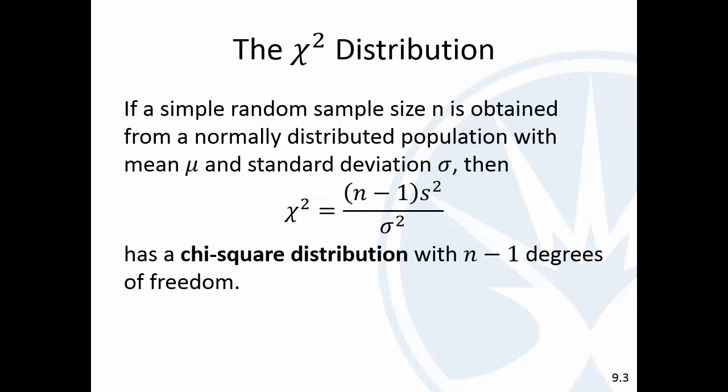The chi-squared distribution—it's usually pronounced, or spelled, I think, C-H-I. So chi-square, not chi, not the T, chi-square. Chi-square distribution.